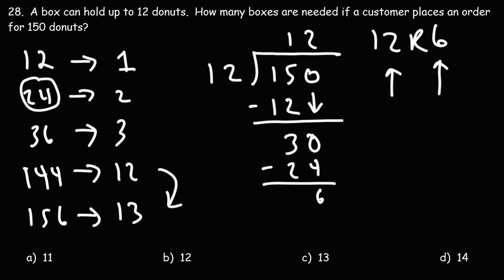But we need at least 13 boxes to hold 150 donuts. The first 12 boxes will be filled, but the last box will have 6. So for this problem, we need to round up, so C is the correct answer.